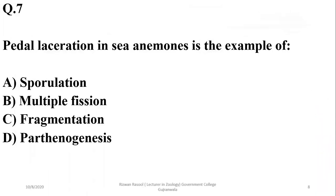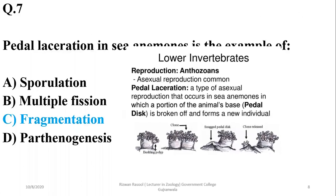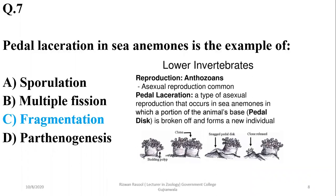Pedal laceration in sea animals is an example of fragmentation in certain sea animals such as class Anthozoa. It is a type of asexual reproduction that can occur in various sea animals, in which a portion of the animal base — as you can see in the diagram — breaks off and splits off, forming new sea animal bodies.